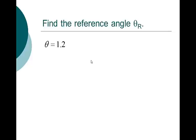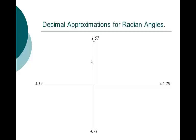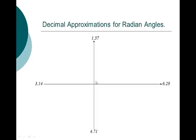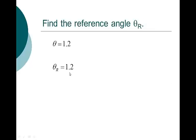How about 1.2? That's not something we know too much about, so here's what you might want to do: knock out the decimal approximations for pi over 2, pi, and 3 pi over 2. That helps us know where 1.2 is. Since 1.2 is in quadrant 1, the reference angle is 1.2. How about 2.3? That's in quadrant 2, so pi minus 2.3 is 0.8416 — and there's your reference angle.